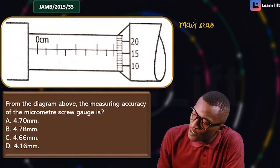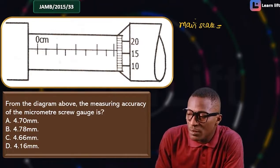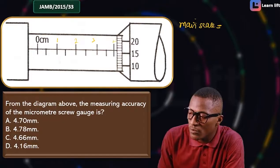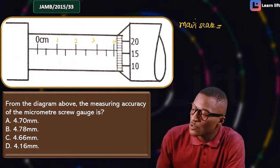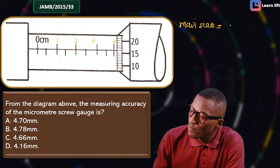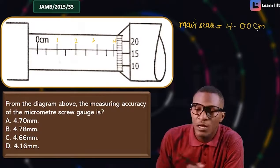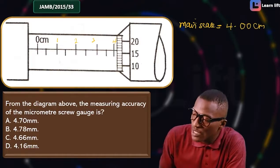For the main scale: this is 0, here is 1, here is 2, here is 3, here is 4. So the main scale reading is 4.00 mm. Now I check where the main scale and screw scale meet.